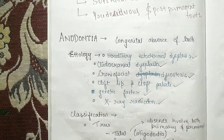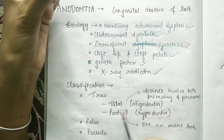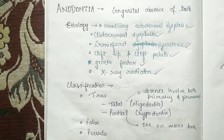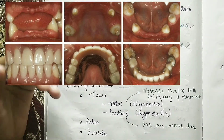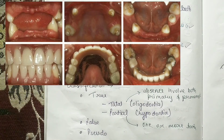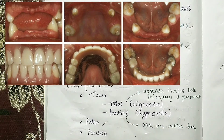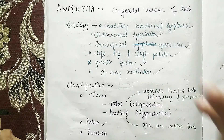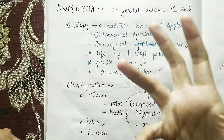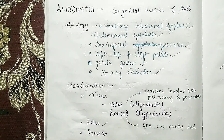Coming to the classification, there are three types. First is true anodontia, which is again divided into total anodontia and partial anodontia — partial we call hypodontia or oligodontia when one or more teeth are missing. Then we have false anodontia, where a tooth has been extracted and appears as anodontia. And pseudo anodontia means multiple unerupted teeth.